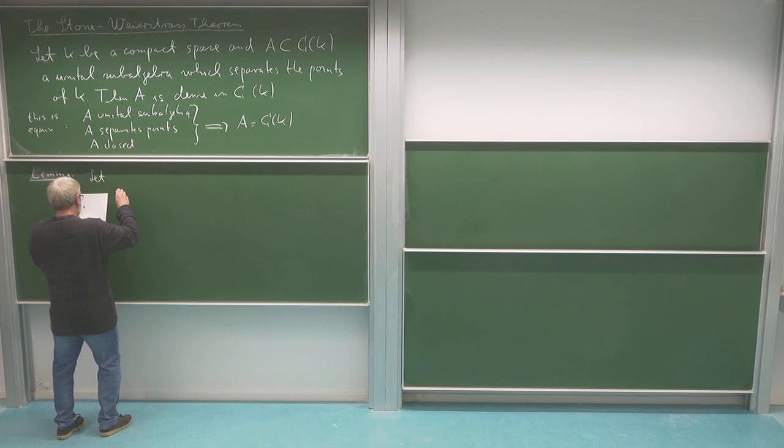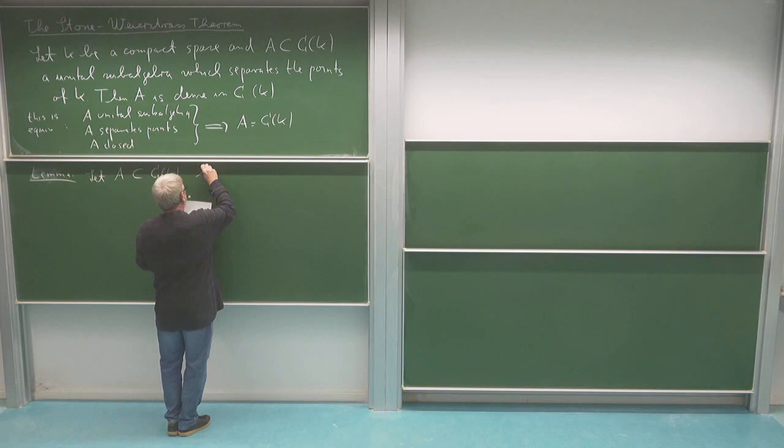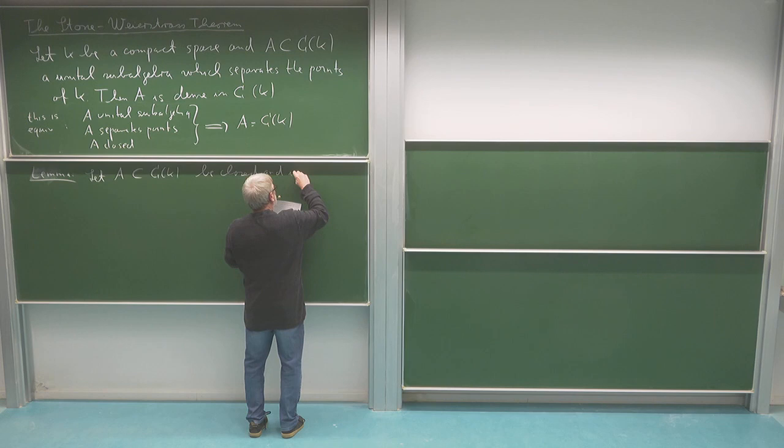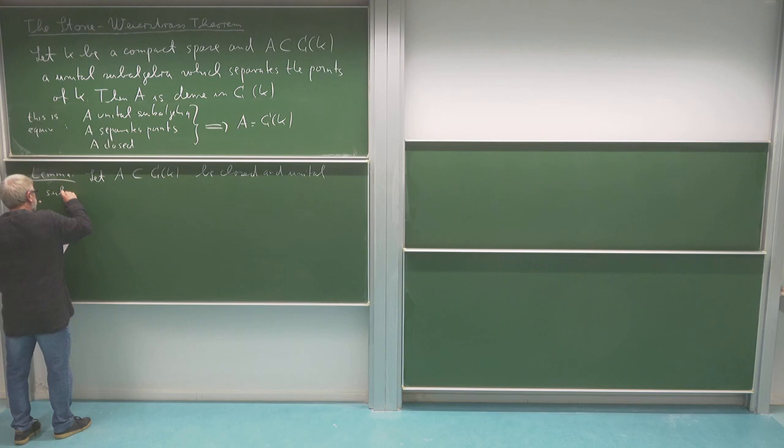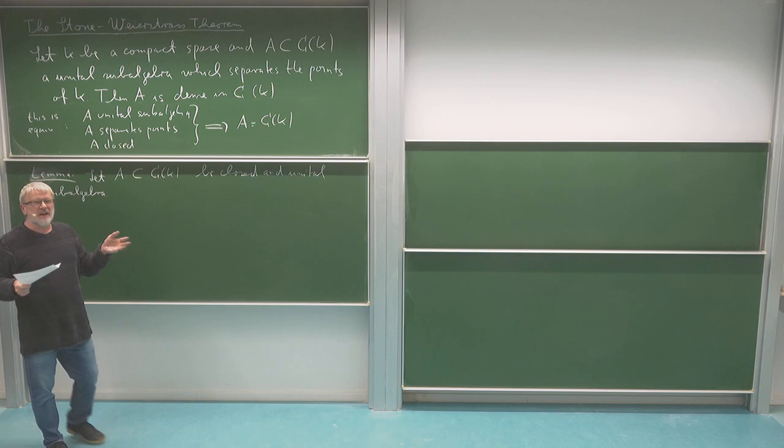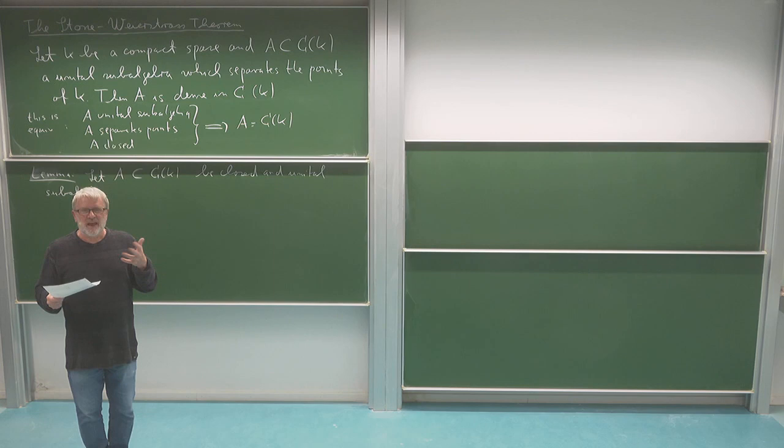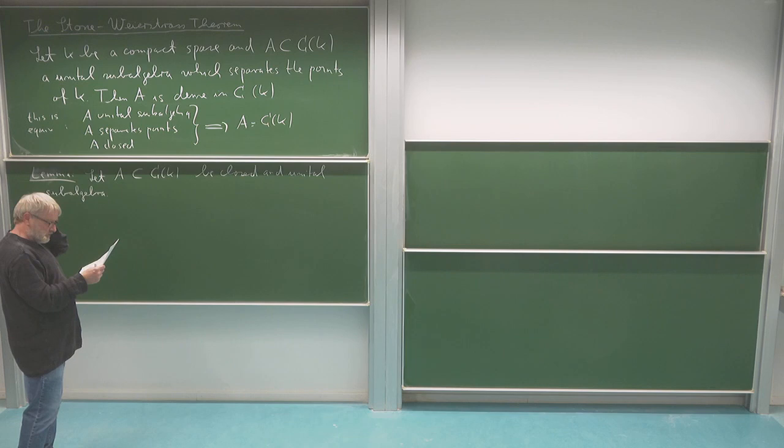So let me look at the situation where I have a subset of C(K) which is a closed and unital subalgebra. At the moment I'm not caring about whether it separates points or not, because I'm more concerned with the question: if I have some elements in A, can I get other elements? How can I build new elements in A out of given elements, just by knowing that it's a closed unital subalgebra, which looks a bit weak.